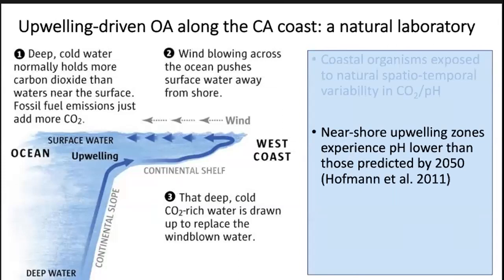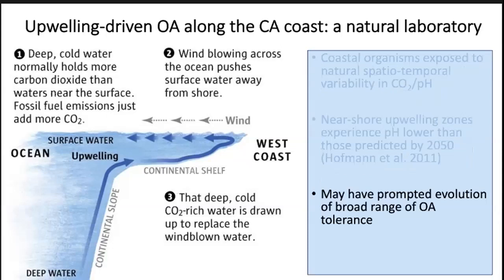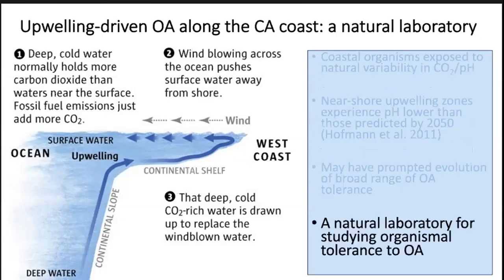Populations of calcifying marine organisms are exposed to natural variation in ocean pH and carbon dioxide due to this seasonal upwelling. The natural variability produced by this intermittent upwelling can produce ocean acidity that is actually far greater in magnitude than what is predicted to change due to ocean acidification by the end of the century. This may have actually promoted the evolution of tolerance to low pH or acidic seawater in marine organisms that have experienced this intermittent upwelling throughout their history, making this region a natural laboratory for studying tolerance to ocean acidification.